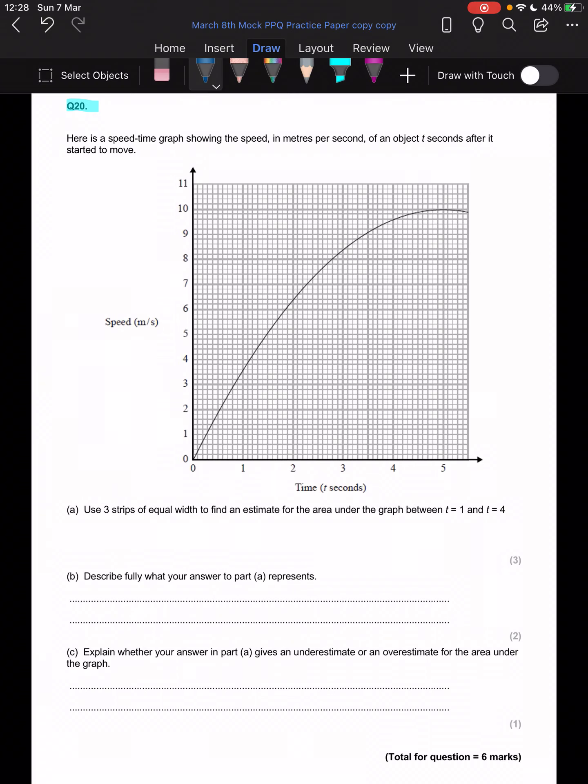Alright, question number 20. Here's a speed-time graph showing the speed in meters per second of an object t seconds after it started to move. We've got the graph there. It says use three strips of equal width to find an estimate for the area under the graph between t=1 and t=4. So let's look for these. Time is here, so t=1 is there and t=4 is here.